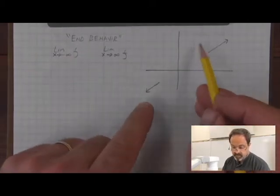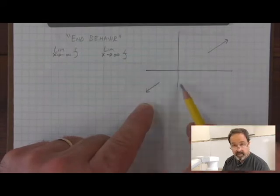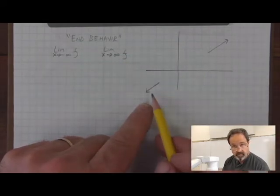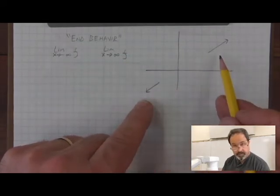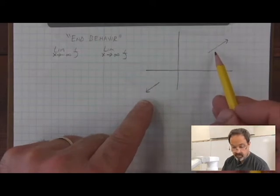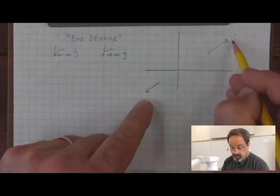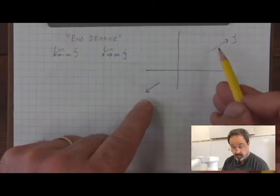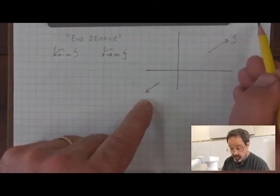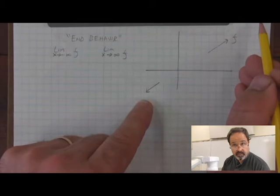In this case, in this graph, I don't know what's happening in the middle, but I can see my end behavior has been shown. The end behavior of this function, if it was f, to the right, is it's going up and up, it's going to infinity as x goes to infinity.